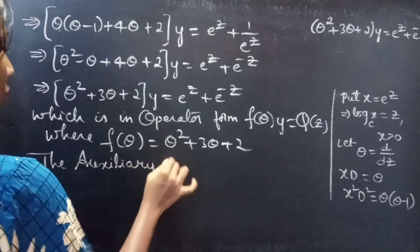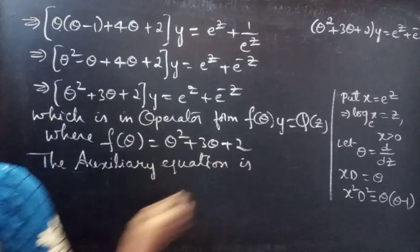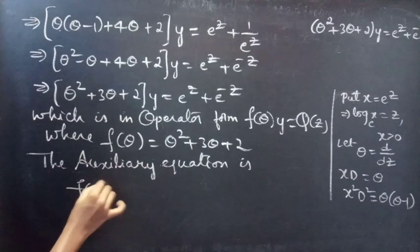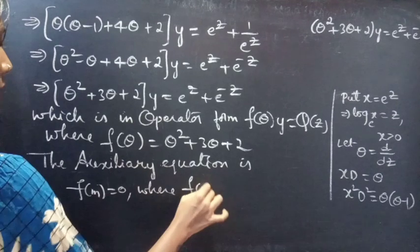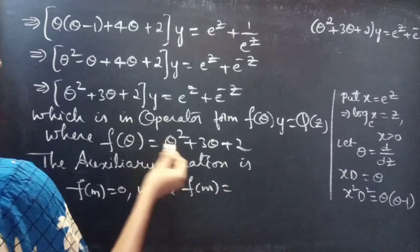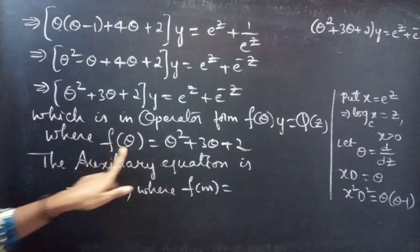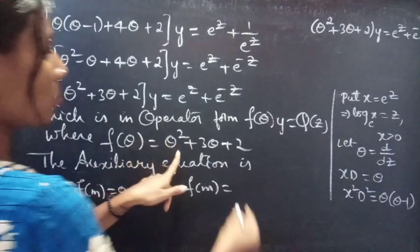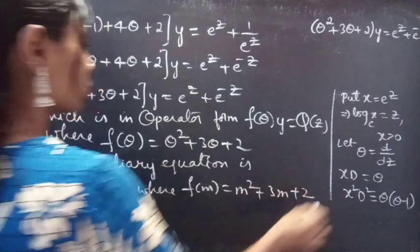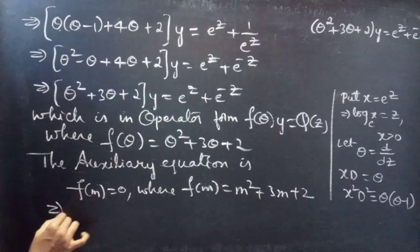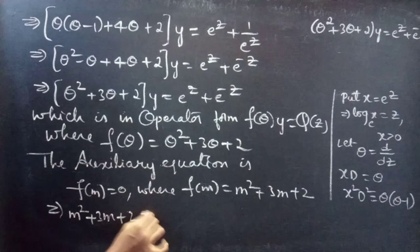The auxiliary equation is f(m) = 0. Since f(theta) = theta² + 3theta + 2, we replace the differential operator by m to get f(m) = m² + 3m + 2. So the auxiliary equation becomes m² + 3m + 2 = 0.